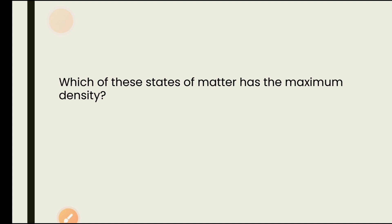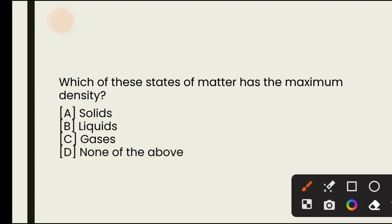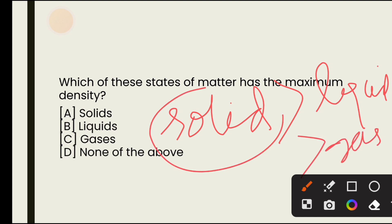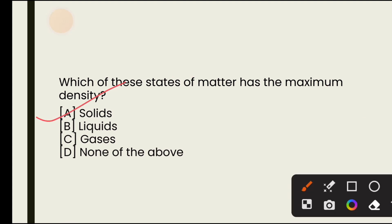First question: which state of matter has the maximum density? Options are solid, liquid, gases, none of the above. If we talk about density, the maximum density is in solid, because the atoms are very closely packed. In liquid, density is less, and in gases, they are packed in a very loose form, so density is the least. The answer is option A — solid has the maximum density.